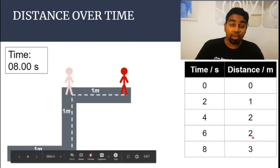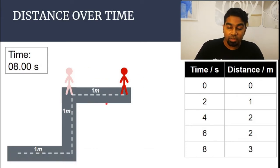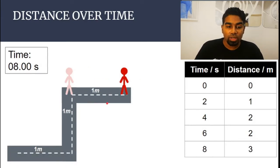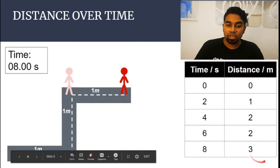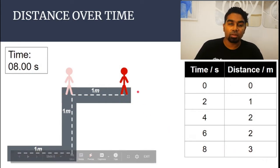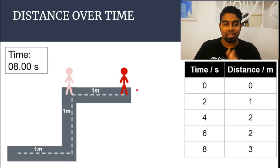But at eight seconds, Mr. Red moved from here to here — another additional one meter. So in total at eight seconds, Mr. Red has moved three meters. So we record three meters. This is how we record the movement of a person or object; this is how we measure distance against time.